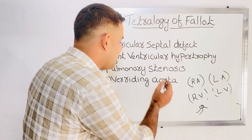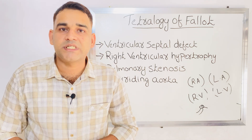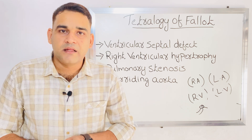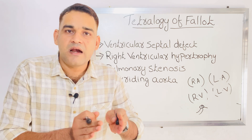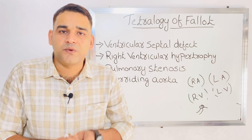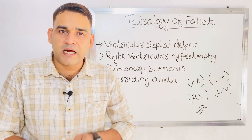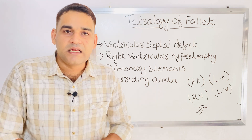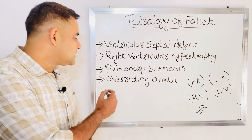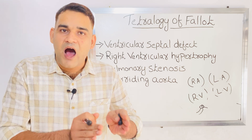The next one is overriding aorta. In overriding aorta, the aorta is in a wrong position. In Tetralogy of Fallot, the aorta will be situated over the ventricular septal defect. Actually, the aorta should be positioned over the left ventricle, but instead, the position of the aorta will be over the ventricular septal defect. That is overriding aorta — the aorta is in the wrong place and will have to work more.